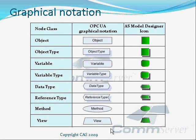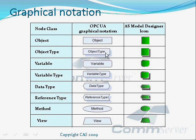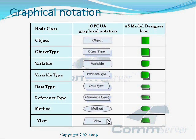Before we start the modeling, we have to talk about the graphical notation. The OPC UA specification defines a graphical notation for OPC Unified Architecture address space data. It defines symbols that represent node classes from OPC UA. The table shows all the symbols from the specification and compares them to icons used by the CAS Address Space Model Designer: object as rectangle, object type as shadowed rectangle, variable as rectangle with rounded corners, variable type as shadowed rectangle with rounded corners, data type as shadowed hexagon, reference type as shadowed six-sided polygon, method as oval, and view as trapezium.